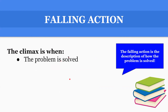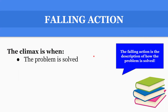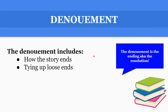Then we have the falling action. This is when the problem is solved — the falling action is the description of how the problem is solved. Then we have the denouement, which includes how the story ends and ties up any loose ends that the reader needs to understand the story. So it is the ending of the story, also known as the resolution.